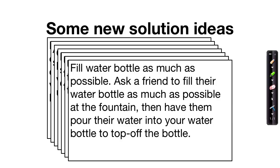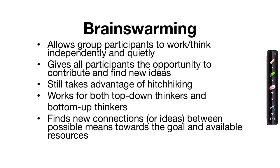So here are seven new solution ideas we generated with brain swarming. This is a good method that allows participants to work and think independently and quietly, and it gives all participants the opportunity to contribute and find new ideas. The process still takes advantage of hitchhiking — gathering ideas from multiple people and using those ideas to inspire new ideas — and it works for both top-down thinkers and bottom-up thinkers. What it does in the end is find new connections between possible means towards the goal and available resources.